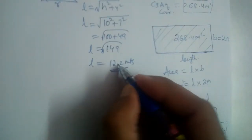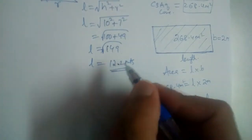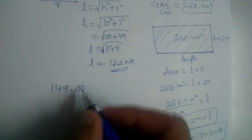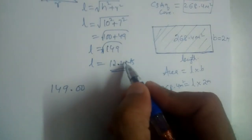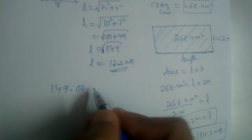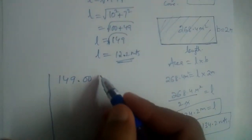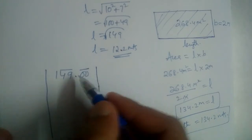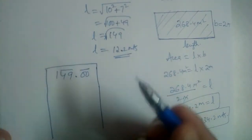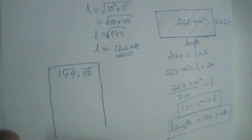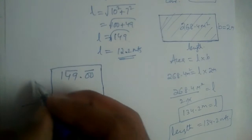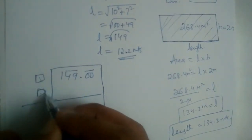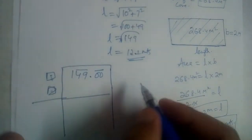Now let's see how we got 12.2 — how to find square roots using the long division method. For √149, we write 149 with two zeros after the decimal point: 149.00. We make pairs of two digits from right to left, because we are finding a square root.